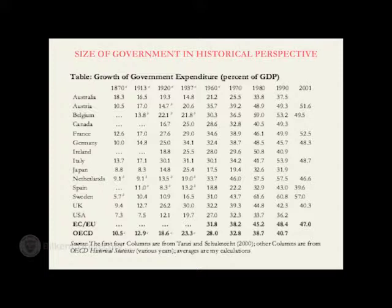When you look at the figures for Britain, by about the 1870s the British government was spending less than 10% — less than one-tenth of all goods and services produced in Britain that year, at the end of the 19th century, right before the emergence of the Belle Époque. The OECD average is about one percentage point higher than that.